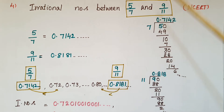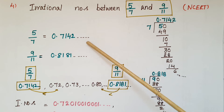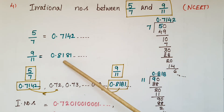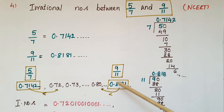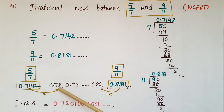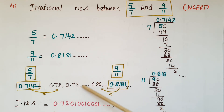Next, to find irrational numbers between two fractions like 5 by 7 and 9 by 11 — this example is from NCERT. First convert these fractions to decimals: 5 by 7 equals 0.7142... and 9 by 11 equals 0.8181... Write some numbers between these two decimals, such as 0.72, 0.73, up to 0.80. These are rational numbers, not irrational numbers.